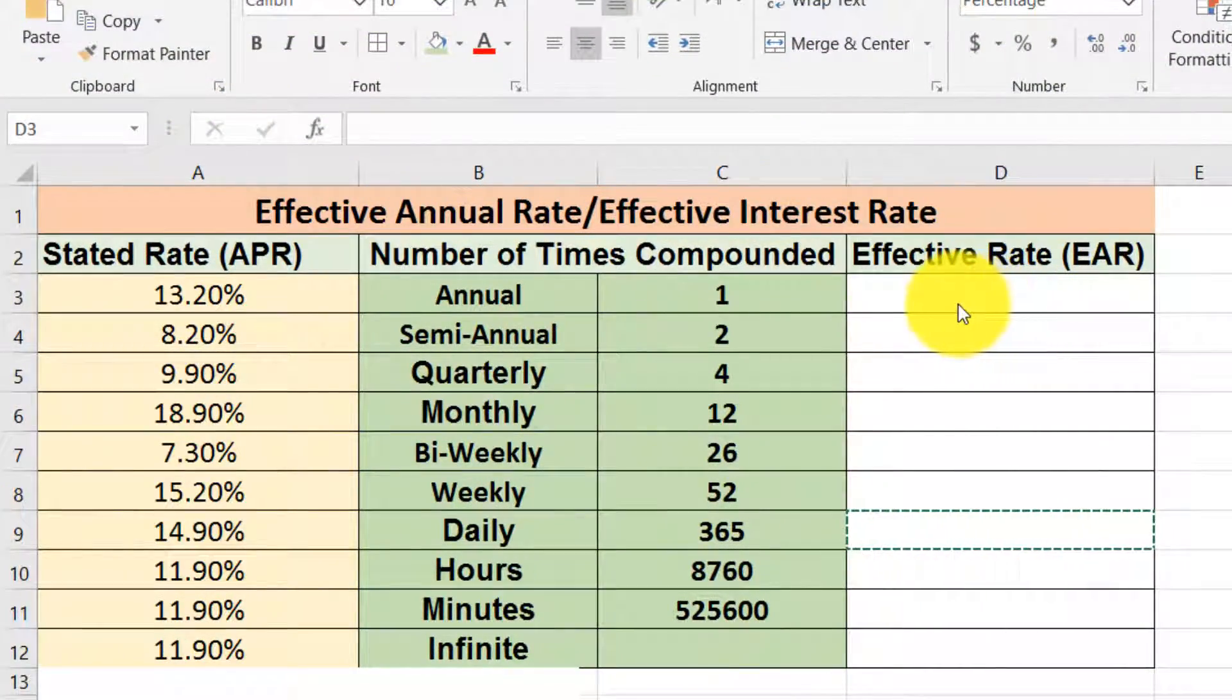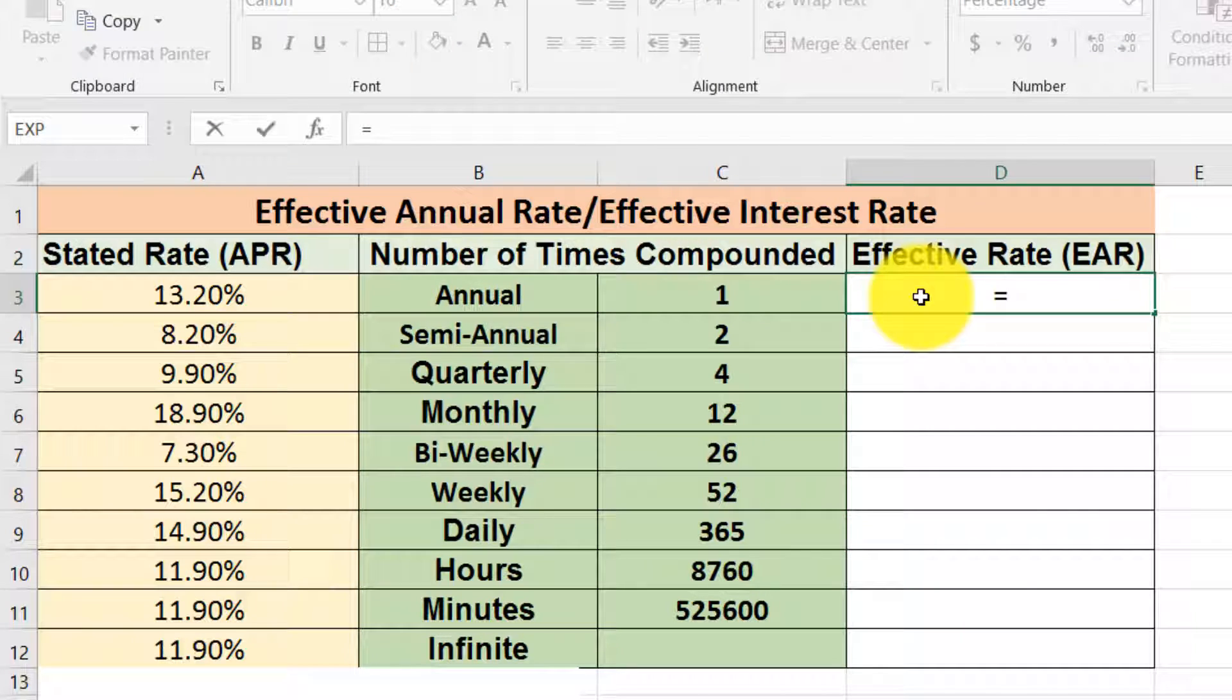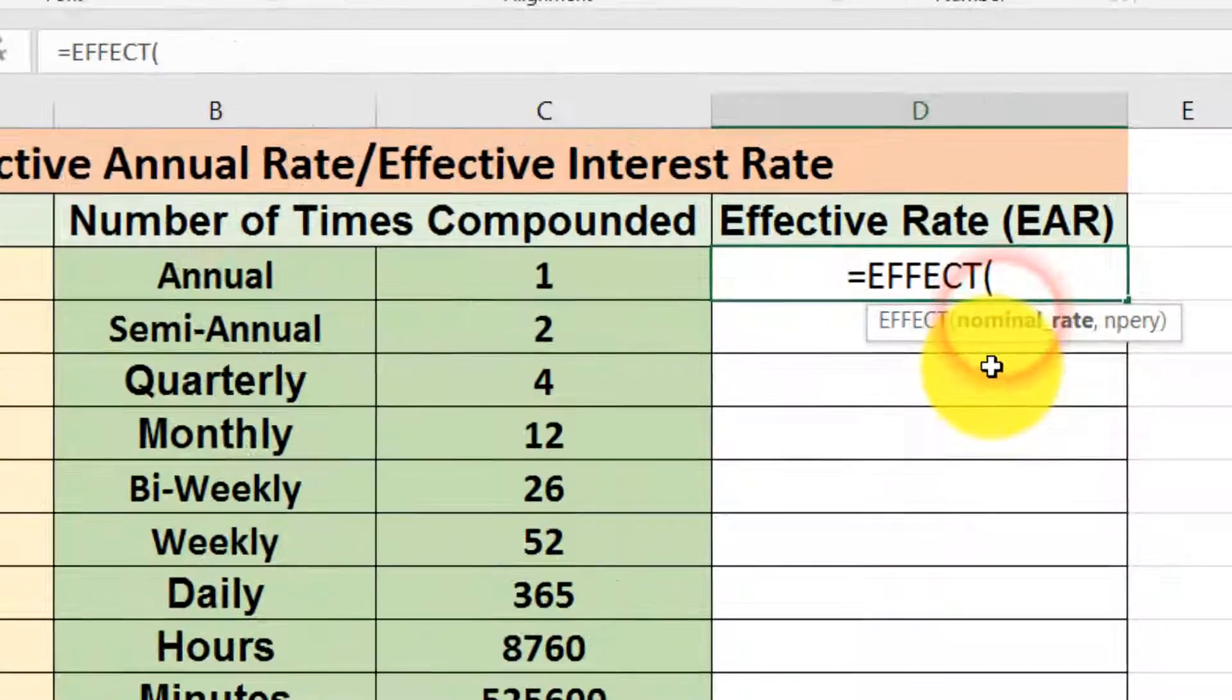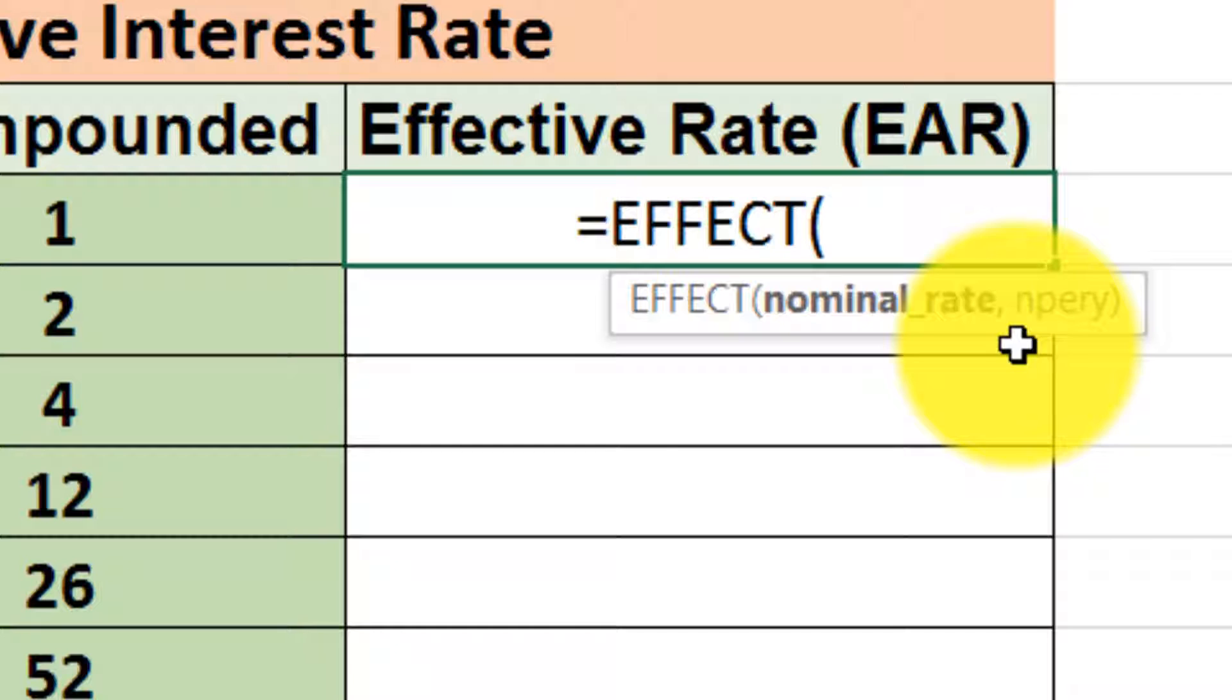For the calculation of the effective interest rate, we need to press equal first, then type 'effective'. It will show the effective interest rate function. We select it, then it shows us the requirements of this function. First is the nominal rate, second is the number of compounding per year.